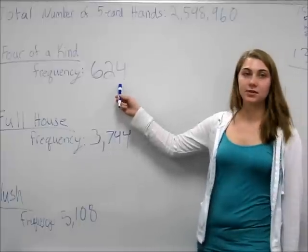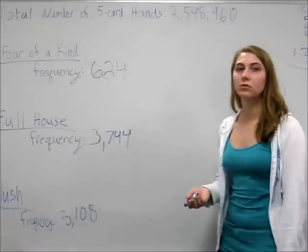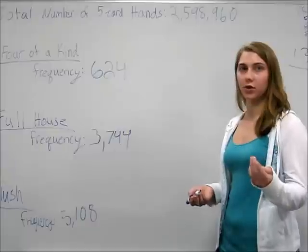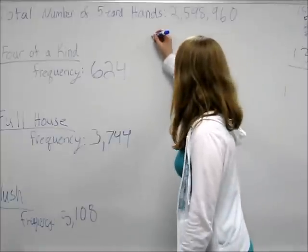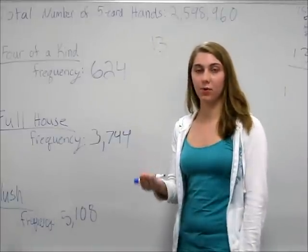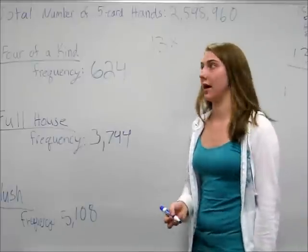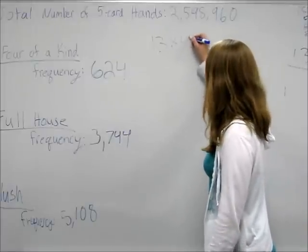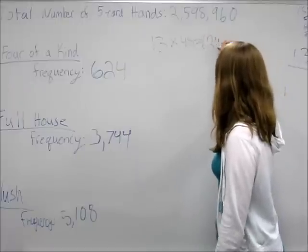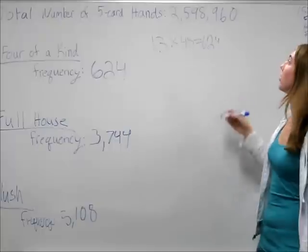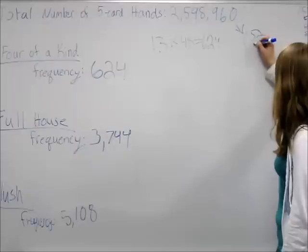How we got the frequency for a four-of-a-kind, for example: you need one card from each rank, and there are 13 ranks, so there are 13 possible sets of four that you can pick from. Then multiply by the number of cards left in the deck after you take four out, which is 48, and that gives you 624. For our total number of hands, we got this number by calculating 52 choose 5.